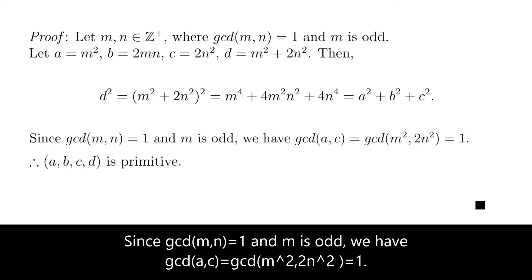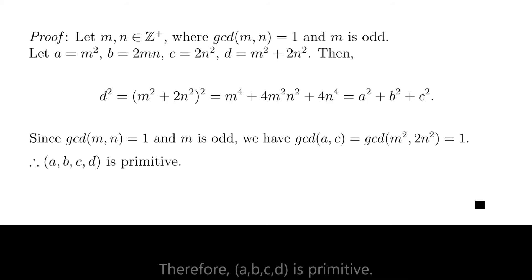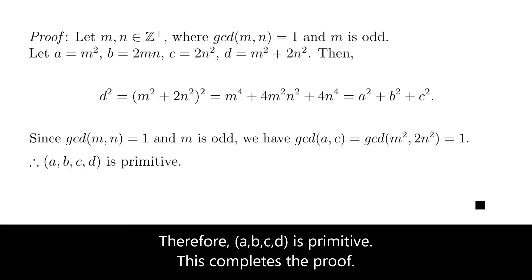Since GCD of M and N equals 1, and M is odd, we have GCD of A and C equals GCD of M square and 2 N square equals 1. Therefore, A, B, C, D is primitive. This completes the proof.